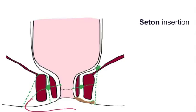So what we can do is insert a seton. This is basically a bit of string, of suture, passed through the tract and tied on the outside, thereby keeping the tract open and reducing the risk of abscess formation. In time, the fistula may heal itself.